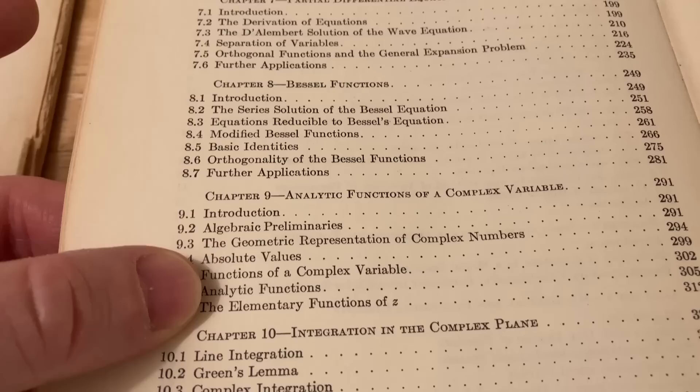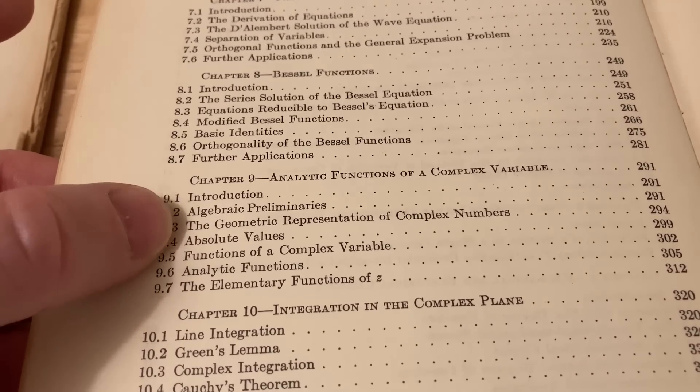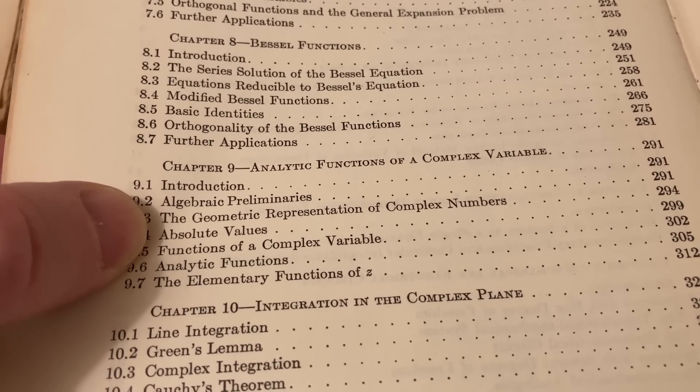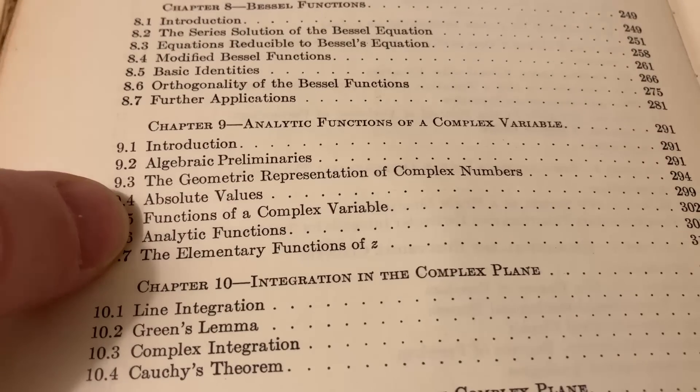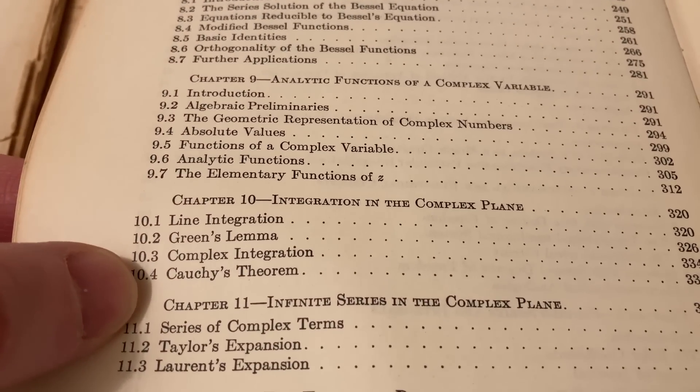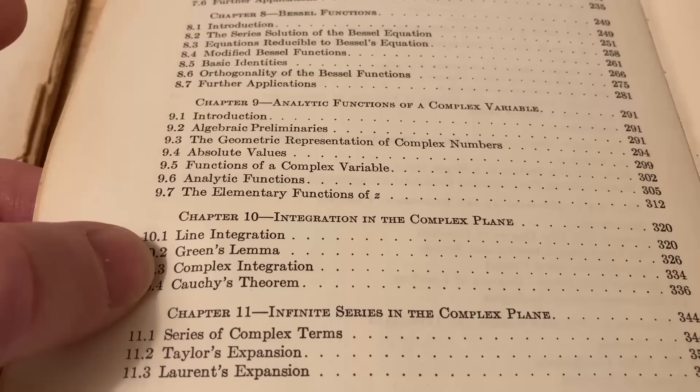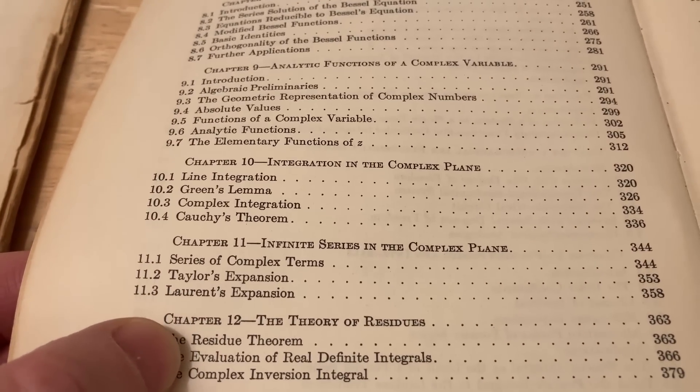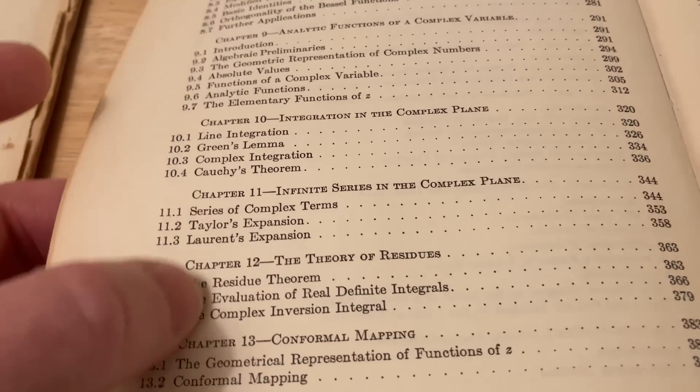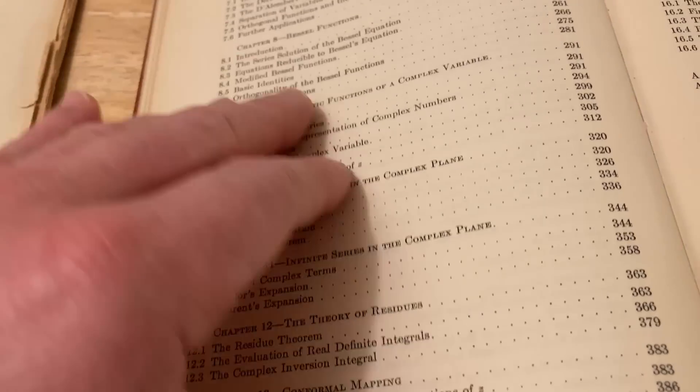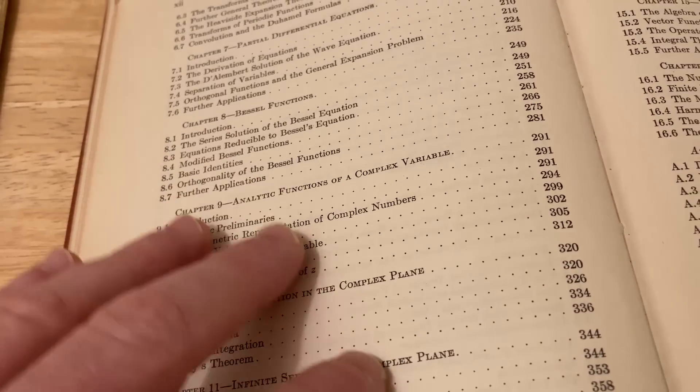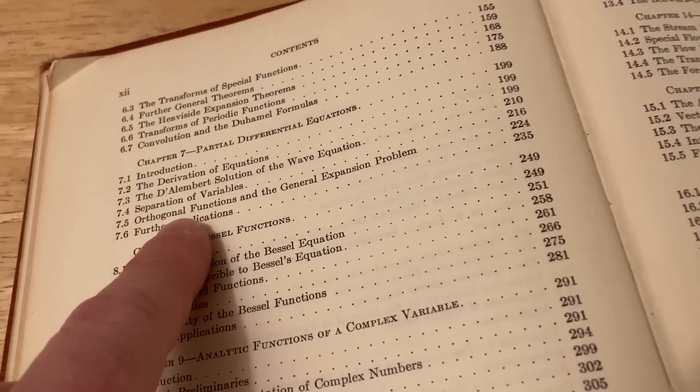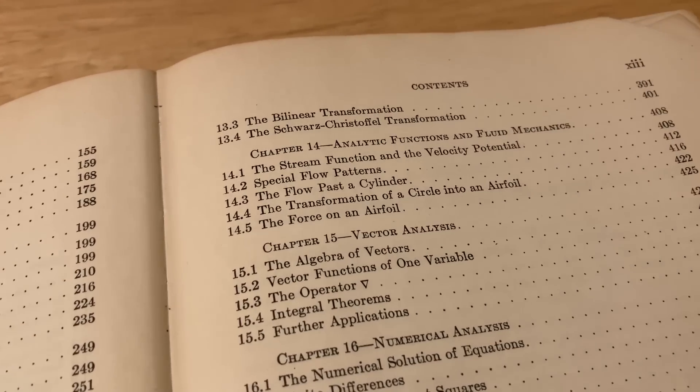Nine is on analytic functions of a complex variable. This would serve as an excellent intro to complex variables. Ten is on integration in the complex plane. Eleven is infinite series in the complex plane. Chapters 12 and 13 are also covered in complex variables courses. Really if you want to learn complex variables, you're going to get a lot out of this book.